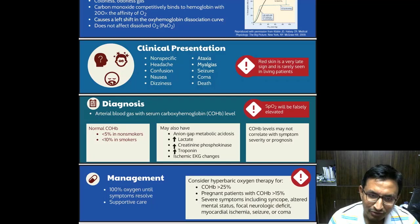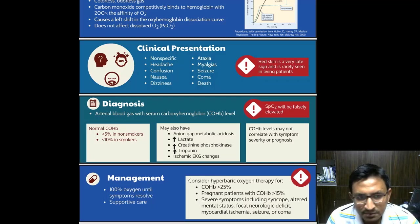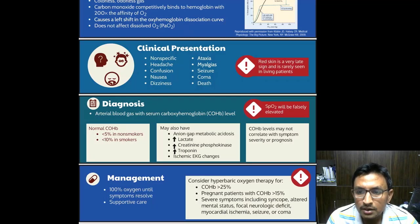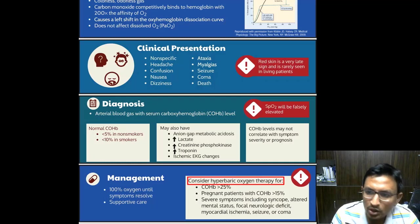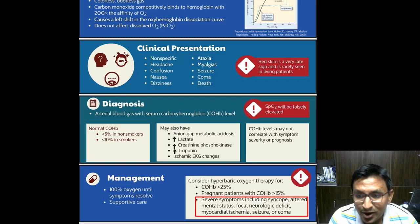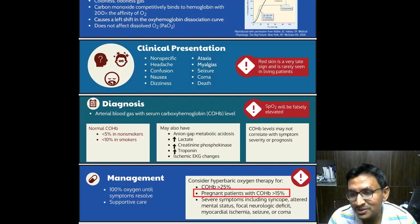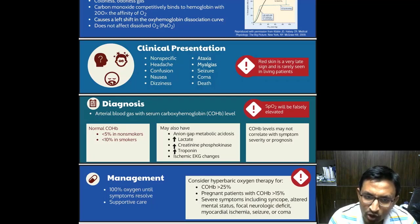In severe cases with very high levels of carboxyhemoglobin, hyperbaric oxygen therapy is used, which involves breathing pure oxygen in a pressurized room or chamber. This therapy is particularly beneficial in cases with high carboxyhemoglobin levels, severe symptoms, or when vulnerable populations such as pregnant women are affected. In all these cases, hyperbaric oxygen therapy is the preferred treatment.